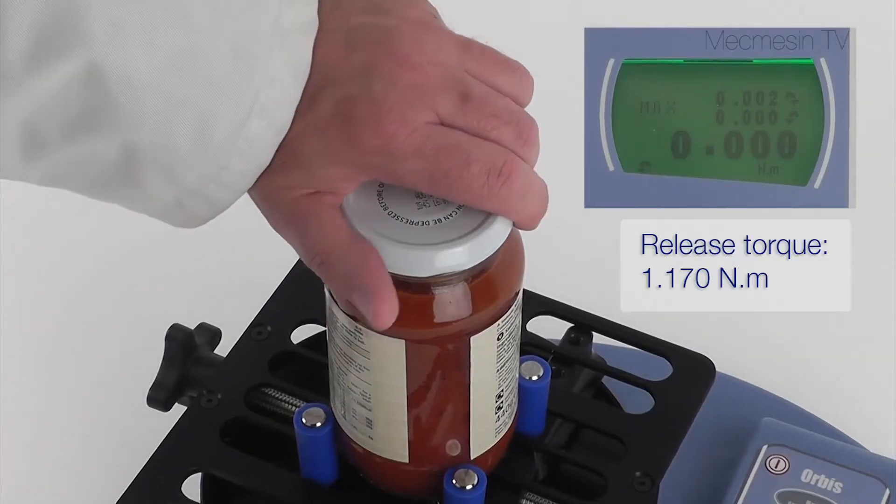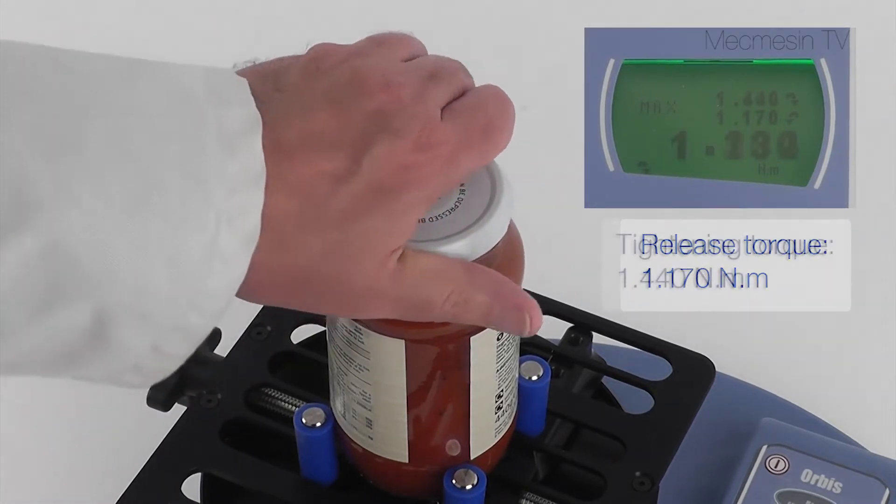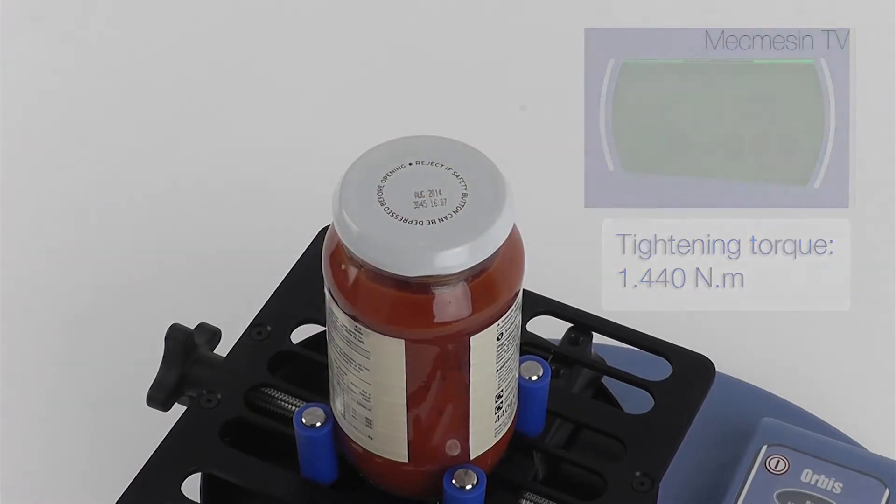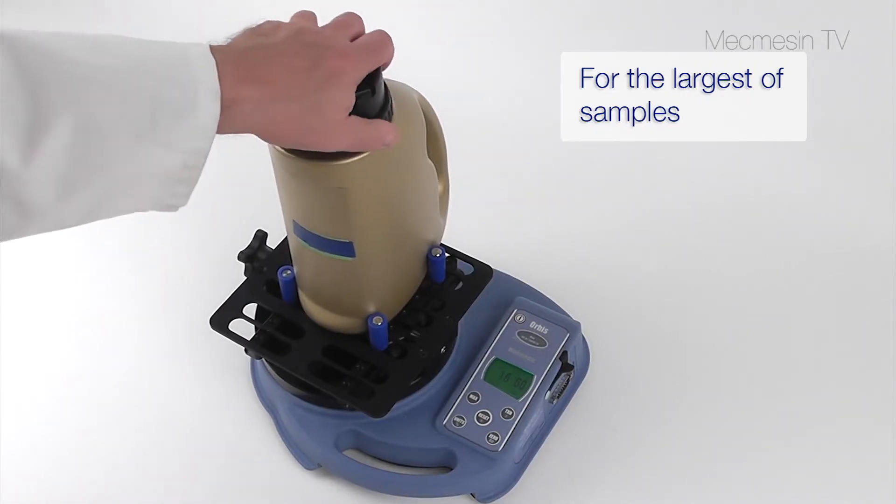The Orbis can measure clockwise or anti-clockwise torque up to 6 Nm, sufficient for most closures that are intended to be opened by hand, and can accommodate a variety of shapes and sizes.